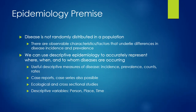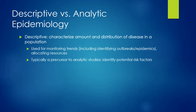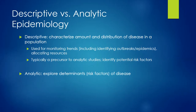The major descriptive variables used in descriptive epidemiology are person, place, and time. We use descriptive epidemiology to characterize the amount and distribution of disease, which is useful for looking at trends across time, evaluating policies and practices, identifying outbreaks, and determining how to allocate resources. Typically, descriptive epidemiology serves as a precursor to analytic studies, which explore determinants or risk factors for disease and ideally determine whether they're causally related to disease.